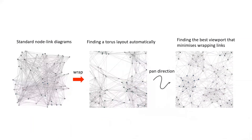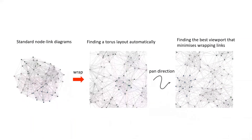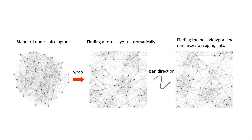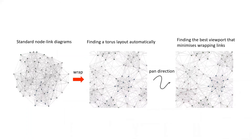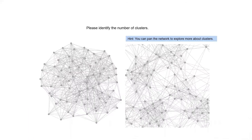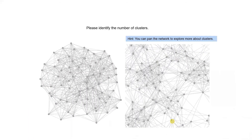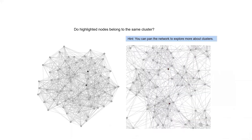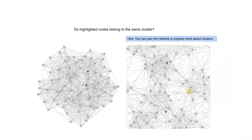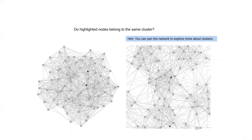We offer two algorithms for improving Torus layouts that better reveal high-level network structures, such as clusters. Do layouts with interactive wrapping provide more benefits to perception than a standard unwrapped representation for cluster identification?